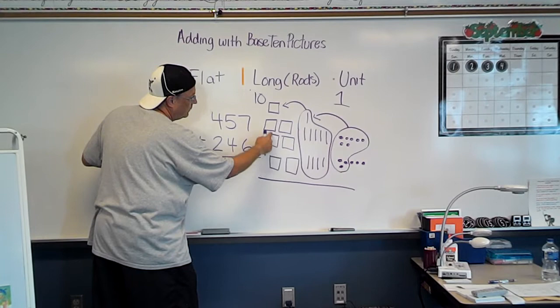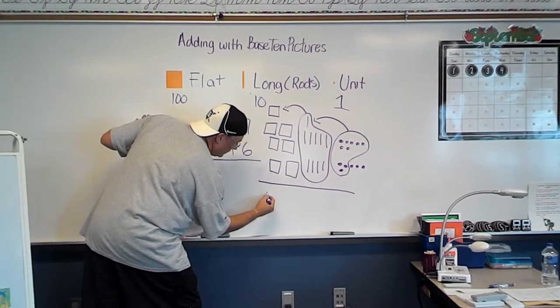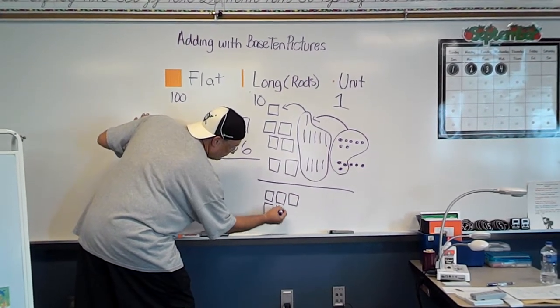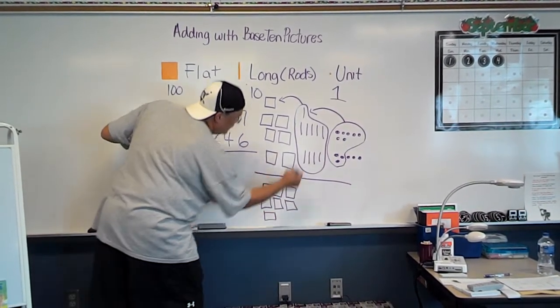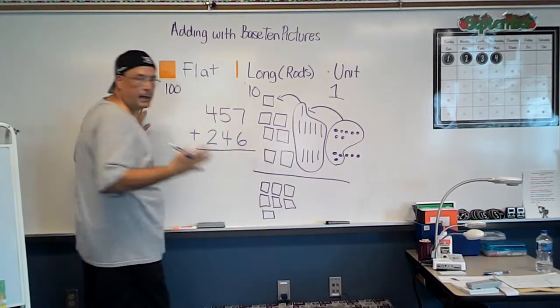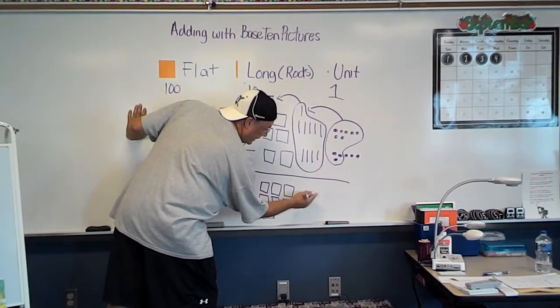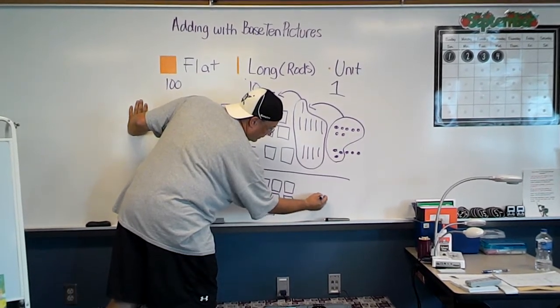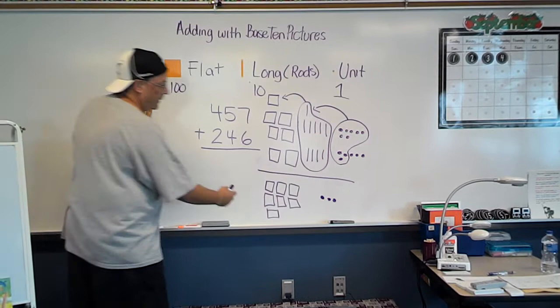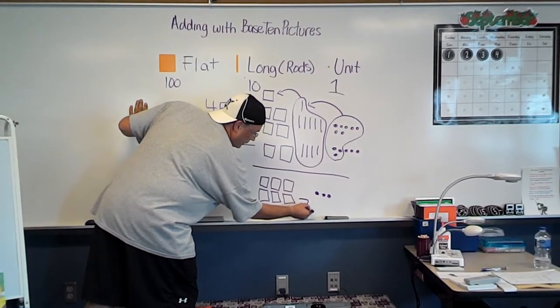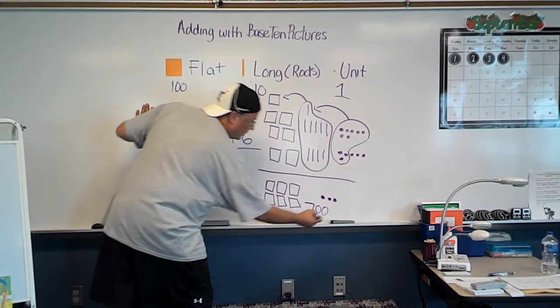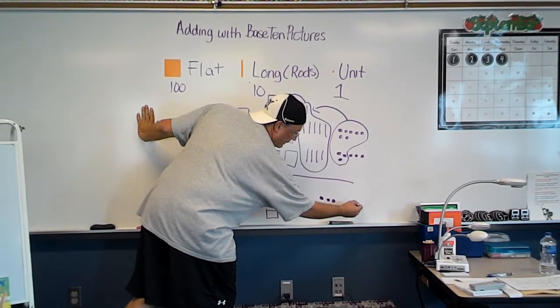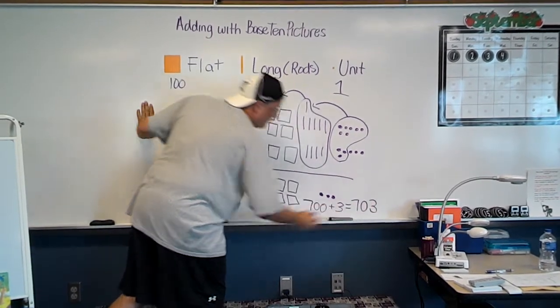Then I just bring it down here. I count up all my flats. 100, 200, 300, 400, 500, 600, 700. Or 7 flats. Now I've already counted this group of 10s, so I don't have any 10s left. So I'm just going to put that. I'm not going to draw any rods right now, or longs. Then I'm going to come over here, and the three ones that I have remain. Then I look. I know my 7 flats have a value of 700 plus, I don't have any 10s, so I'm not going to add anything, and my three ones. That has a value of 703.